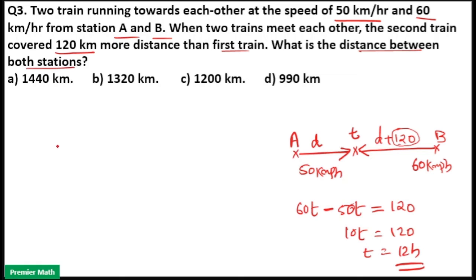Time to meet is 12 hours means the total distance covered will be the relative speed of both trains, which is 50 plus 60. Because both are traveling in opposite directions, times the time taken of 12 hours. That means 110 times 12 equals 1320 km. So option B is your answer.